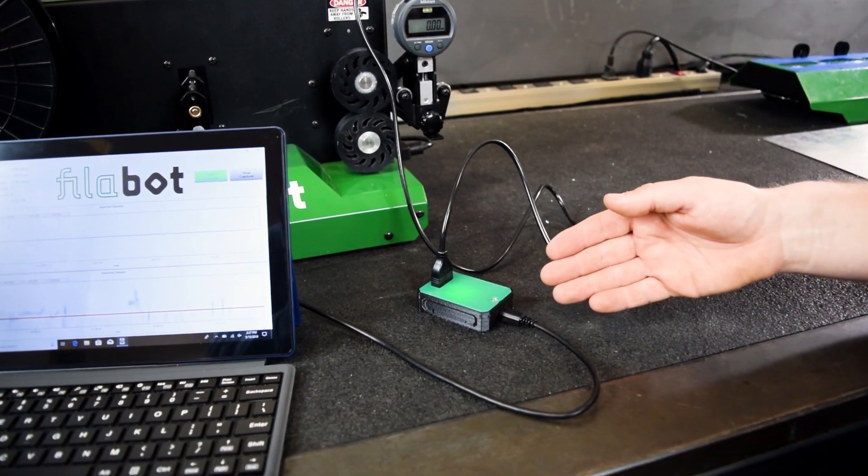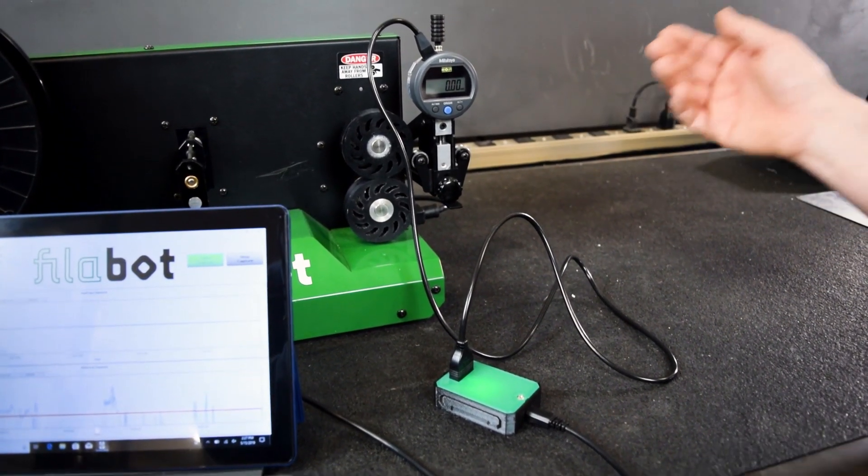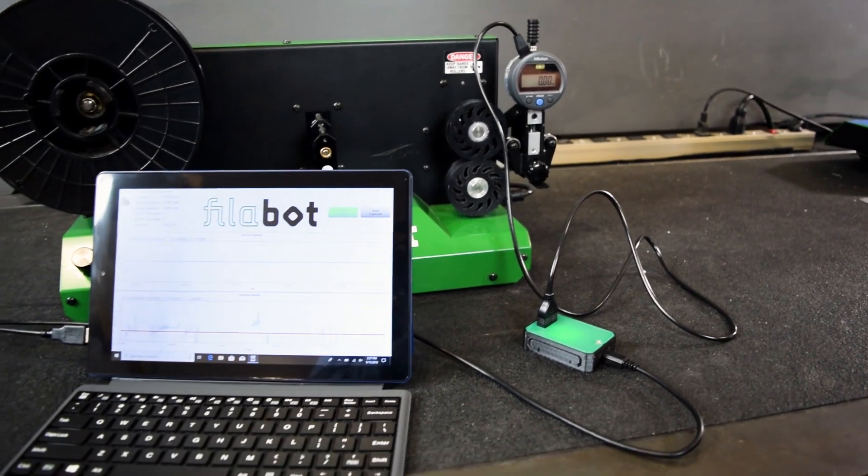The SPC unit reads diameter data from the Mitutoyo Fill and Measure and sends it to the Fill and Logger software running on a Windows PC.